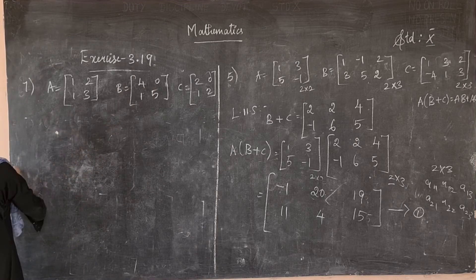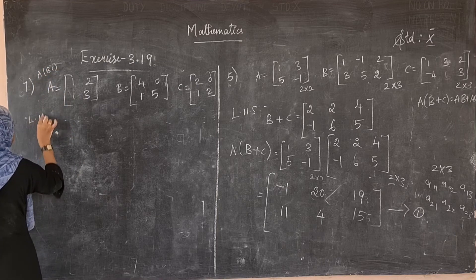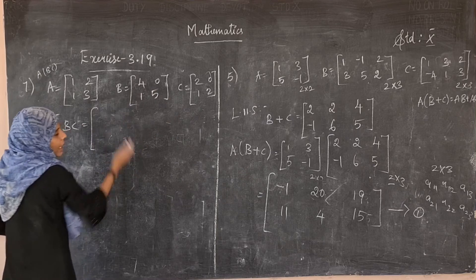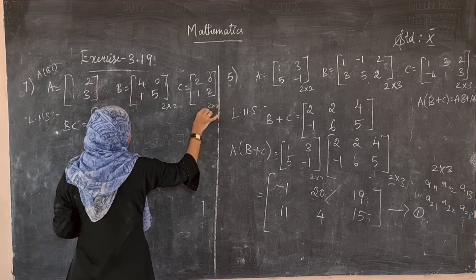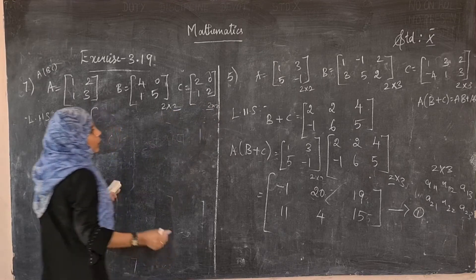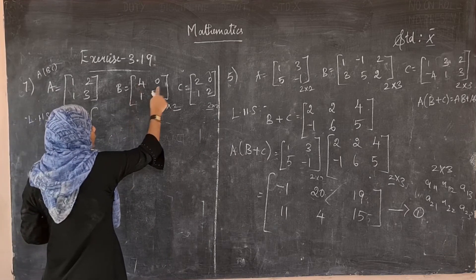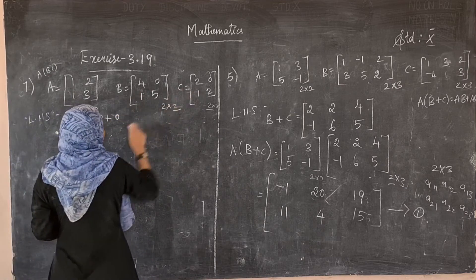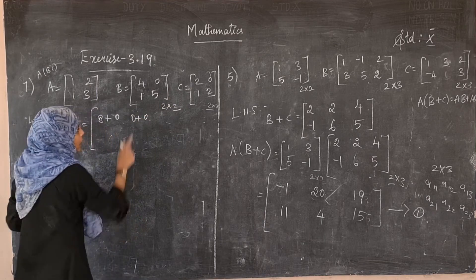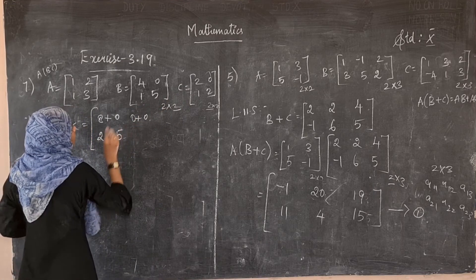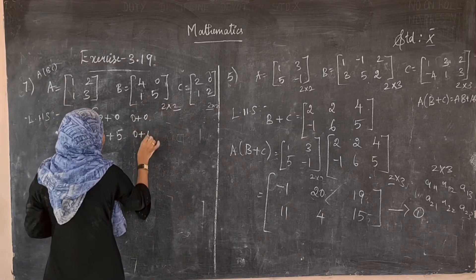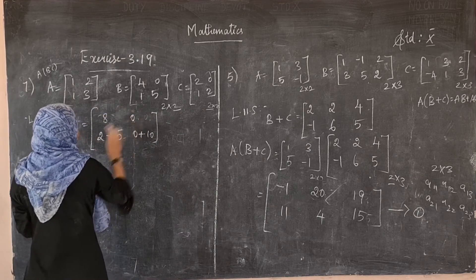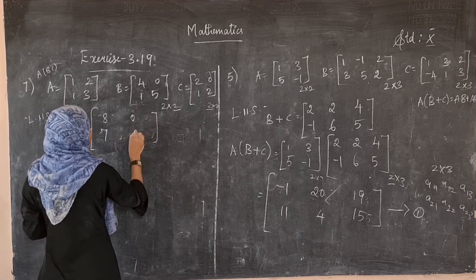For the LHS, first compute BC: B is 2×2 and C is 2×2, so the result is 2×2. B11 = 4×2 + 0×1 = 8; B12 = 4×0 + 0×2 = 0; B21 = 1×2 + 5×1 = 7; B22 = 1×0 + 5×2 = 10. So BC = [8, 0; 7, 10].